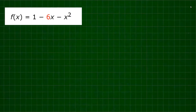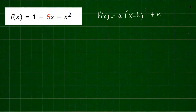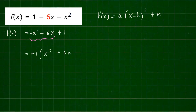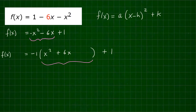Now to write this function in standard form — f(x) = a(x − h)² + k — we're going to complete the square. We rearrange the terms to get negative x squared minus 6x plus one. We pull out the negative one from the x-squared and negative 6x terms, giving us negative one times (x squared plus 6x), with a space, and then we still have the one outside.